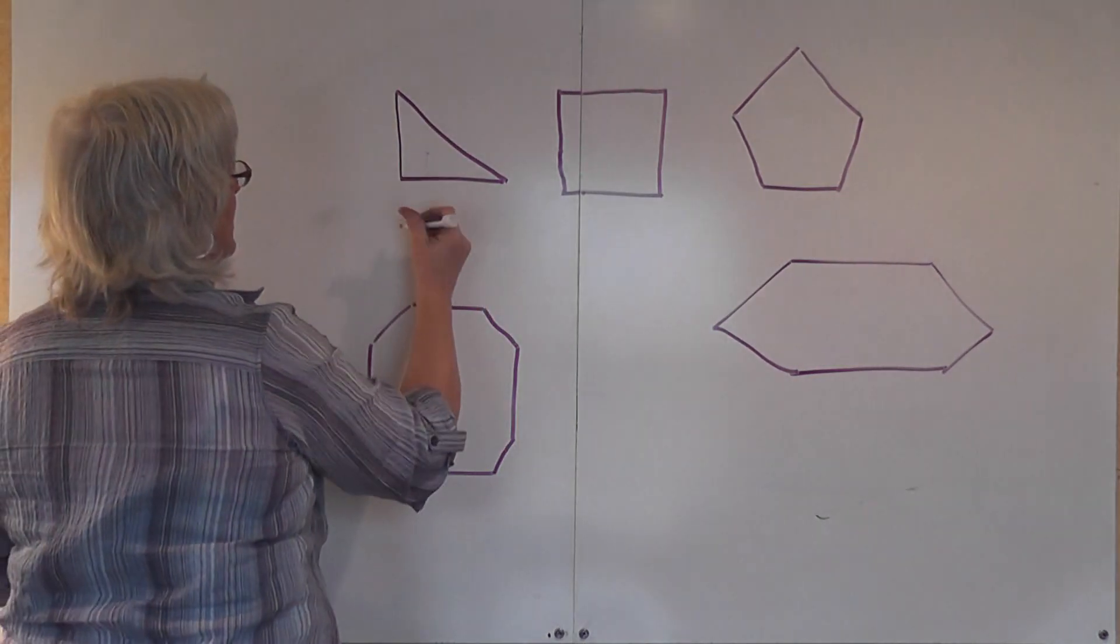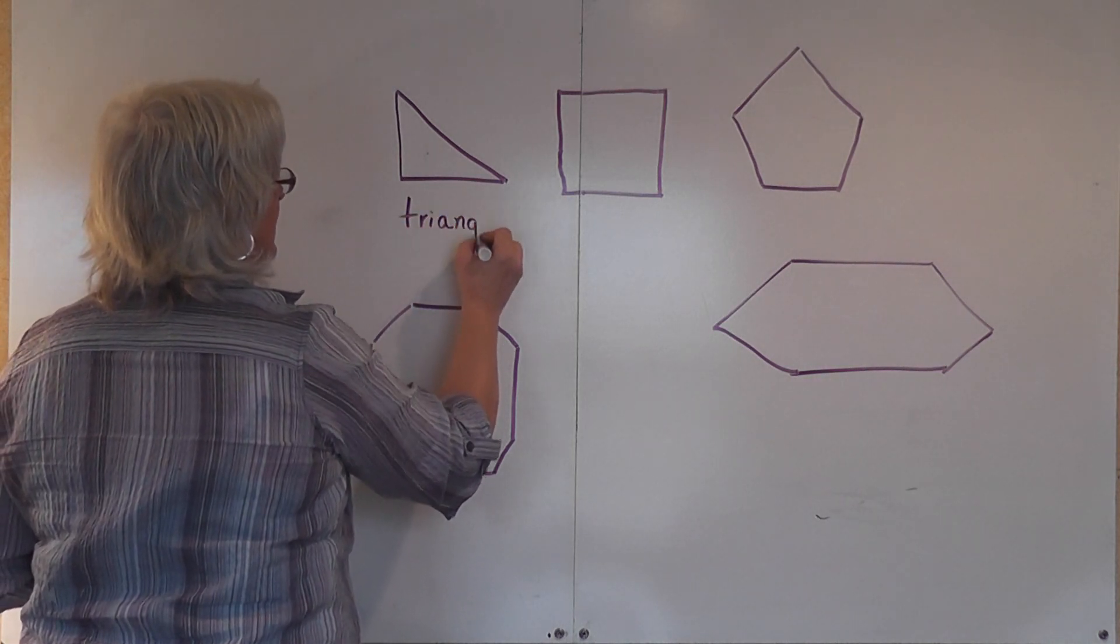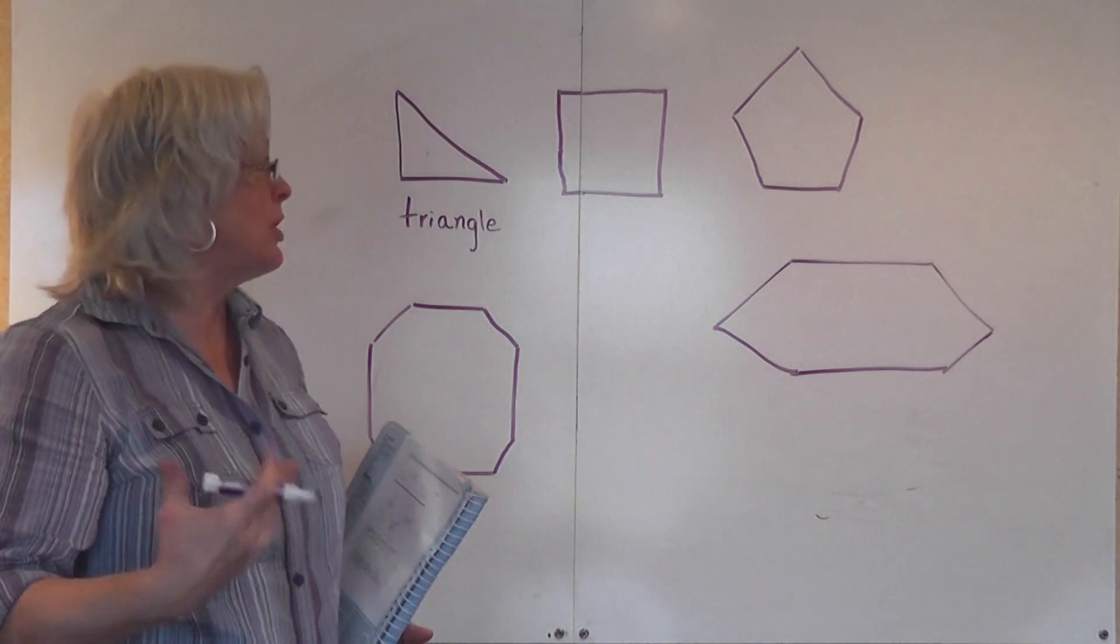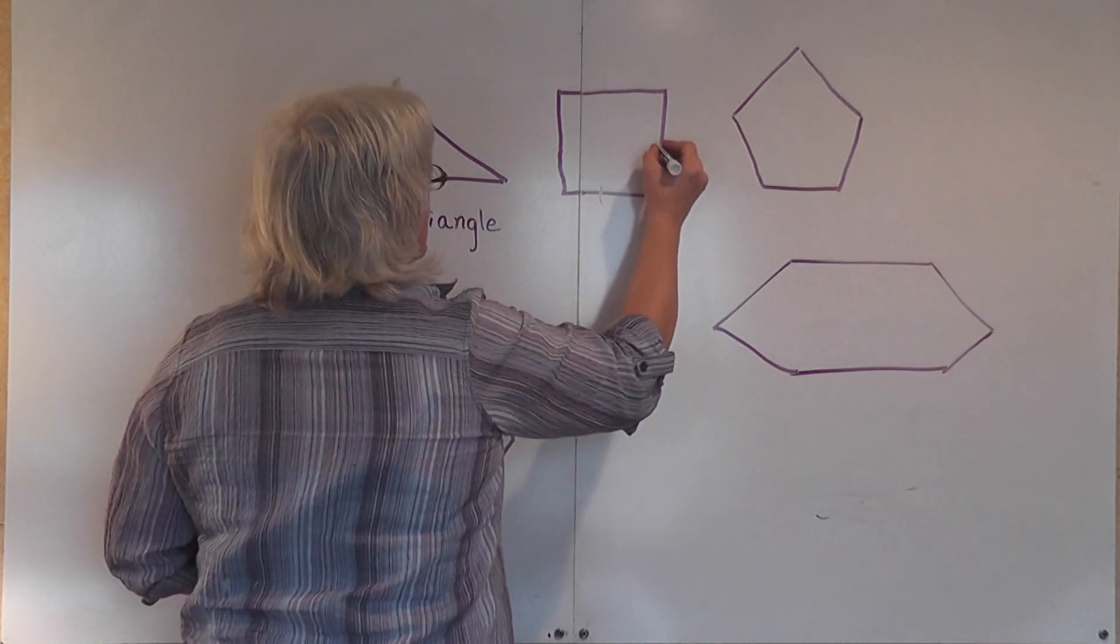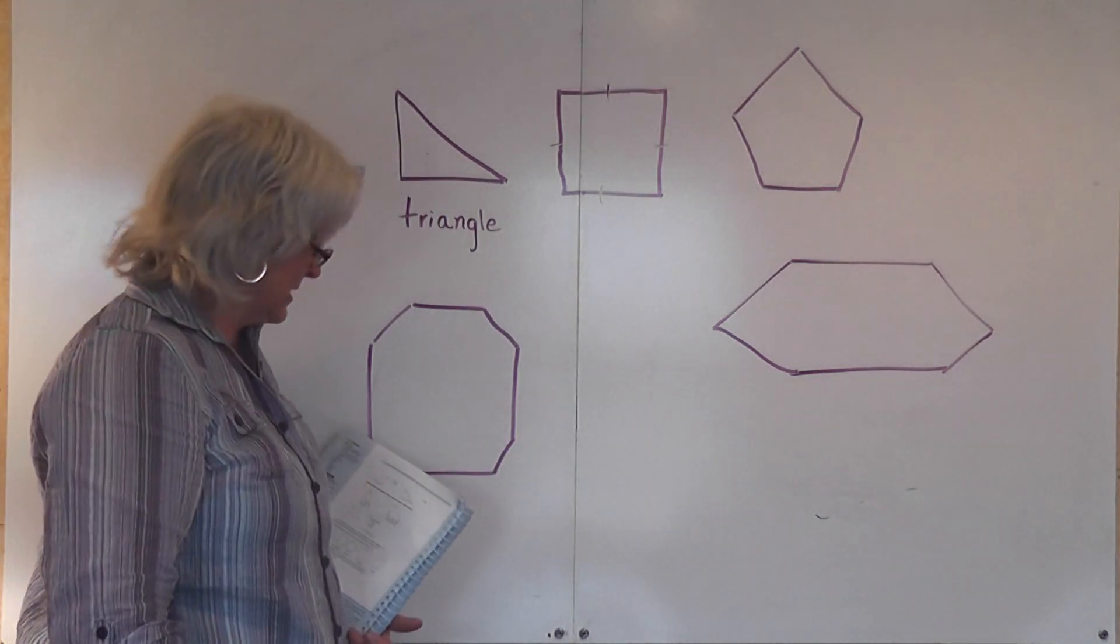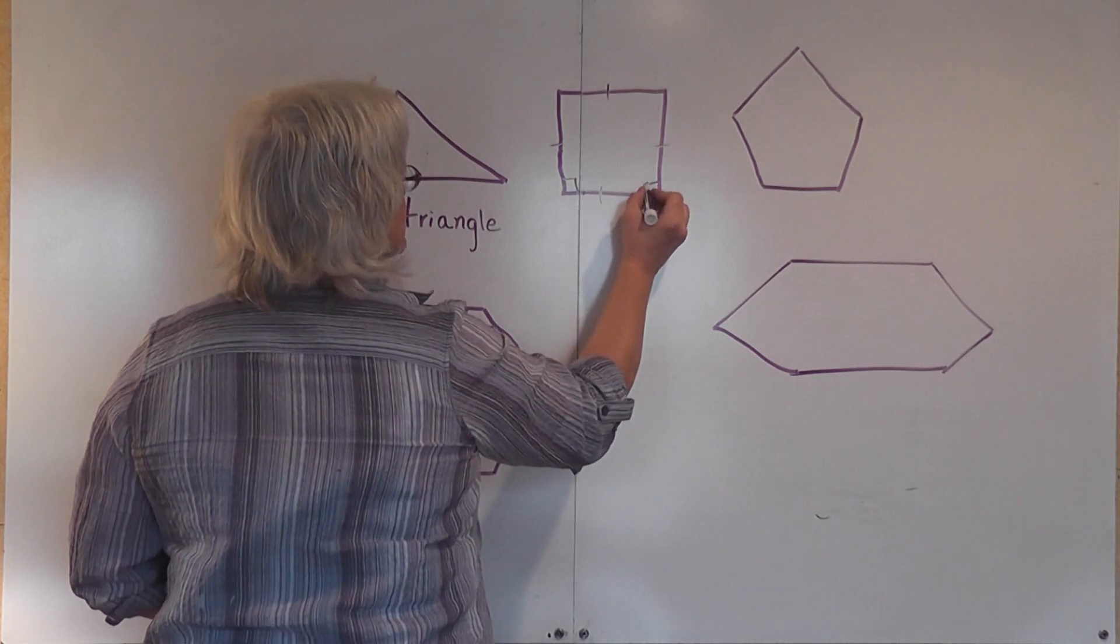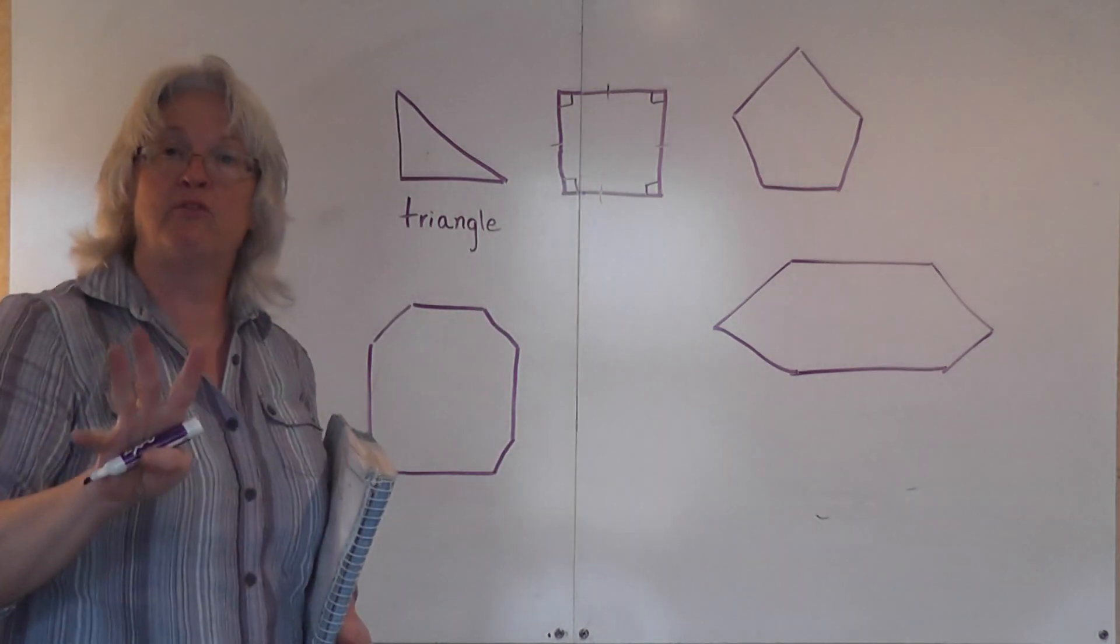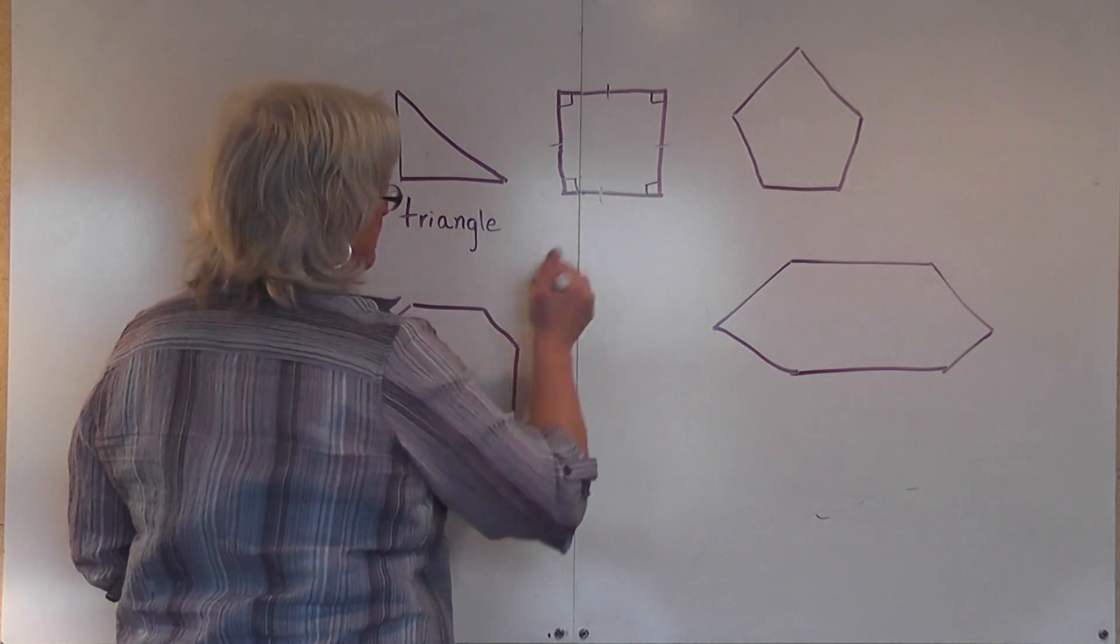A three-sided figure, tri, is a triangle, which of course you already knew. This four-sided figure that we have here—don't automatically say that it's a square. A square has to have equal sides and equal right angles.